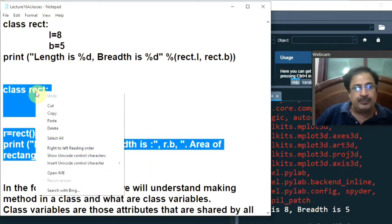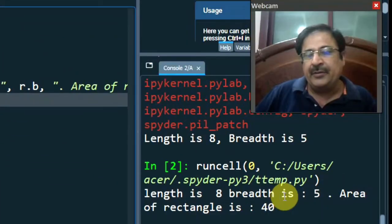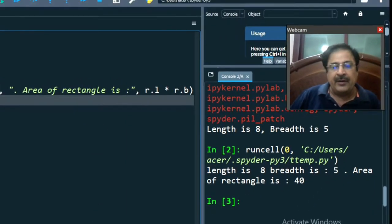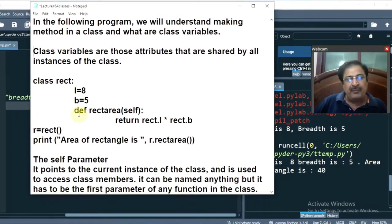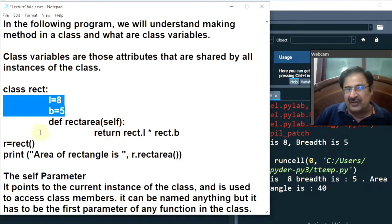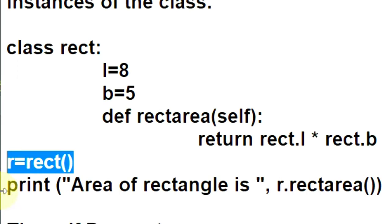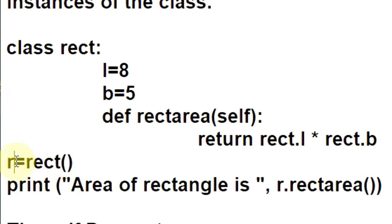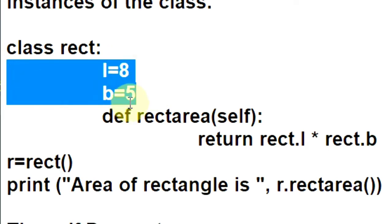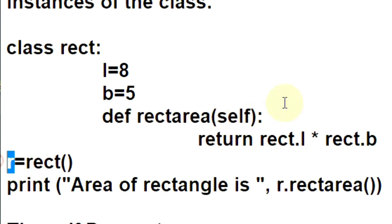Let's run this program. Length is 8, breadth is 5 and area of rectangle is 40. In this class, you have made use of a function also, confirming the definition that a class is a collection of functions and attributes. This is the class with two attributes — length and breadth — and one function, RectArea. Here you are making an object R of Rect class, so this R object gets L and B initialized to 8 and 5, and also gets the RectArea function. Area returned is R.RectArea.